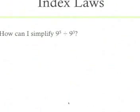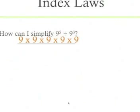How can I simplify 9^5 divided by 9^3? Well, we've already learned that the index law was a^m divided by a^n equals a^(m-n), so just looking at that you would expect the answer to be 9^2, because 5 minus 3 is 2.